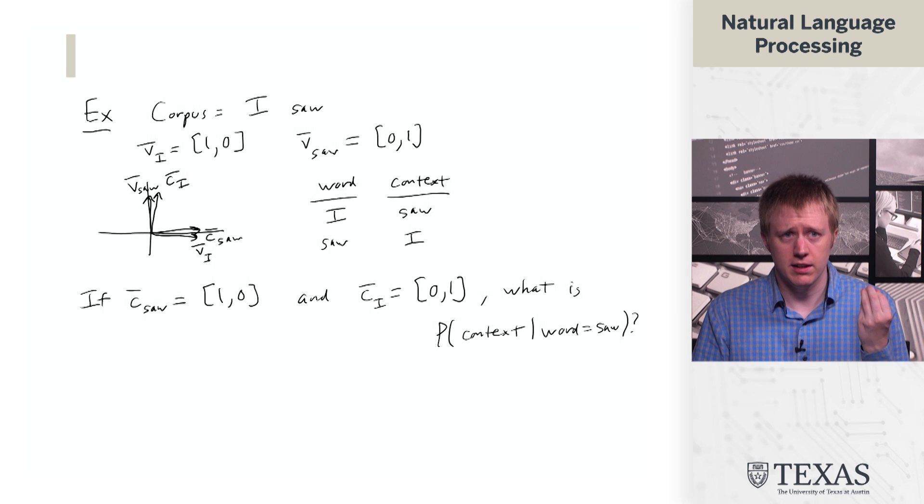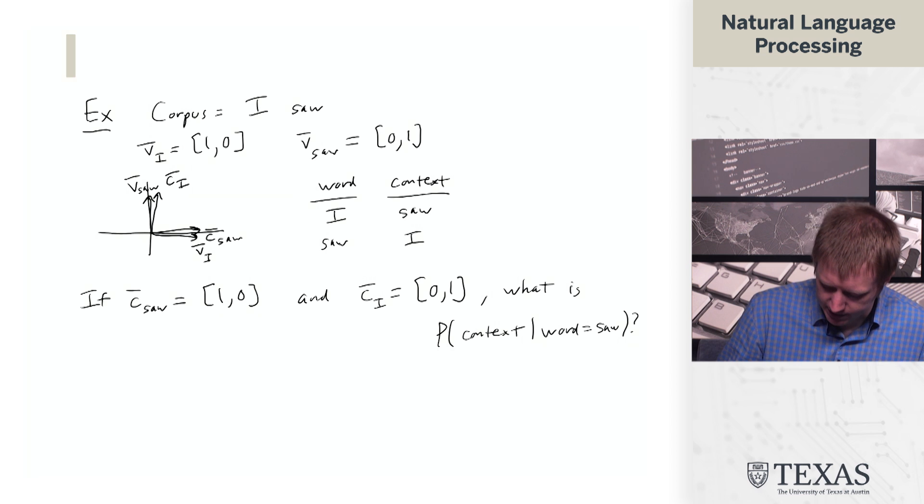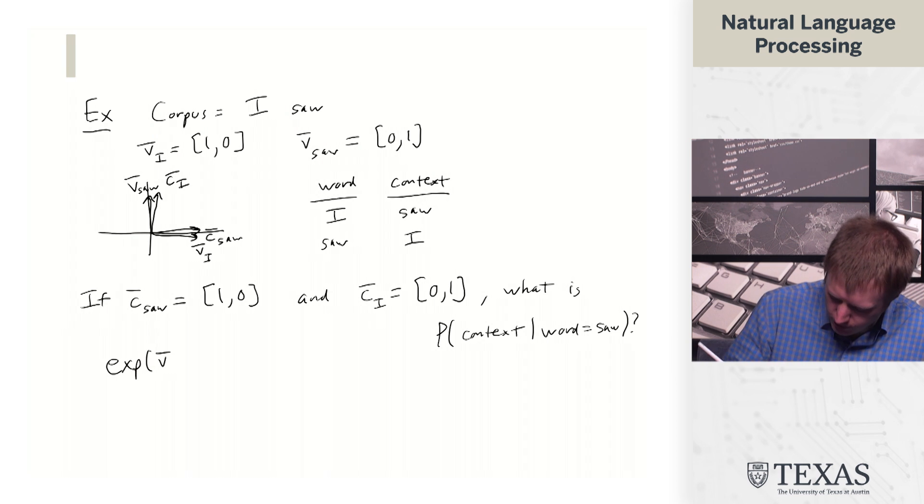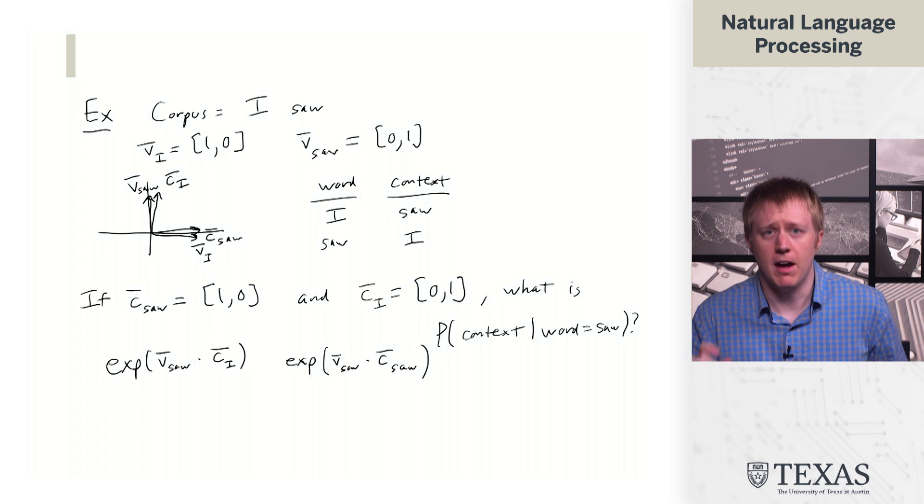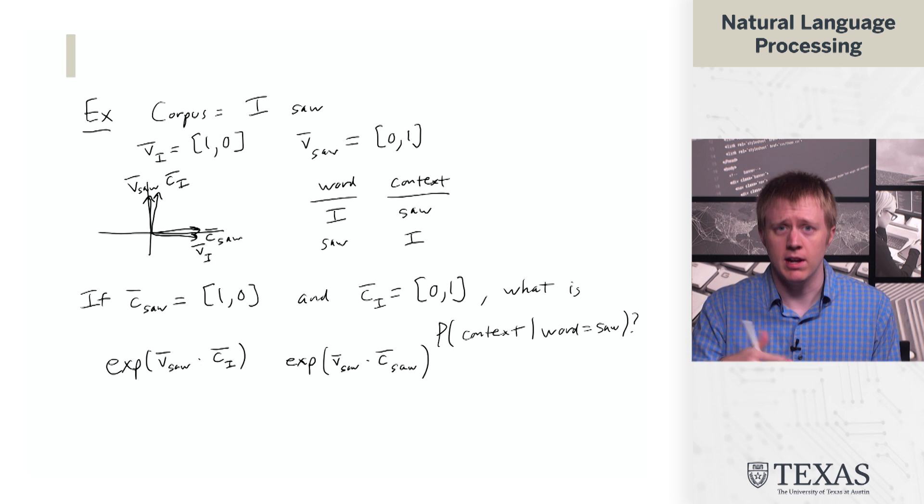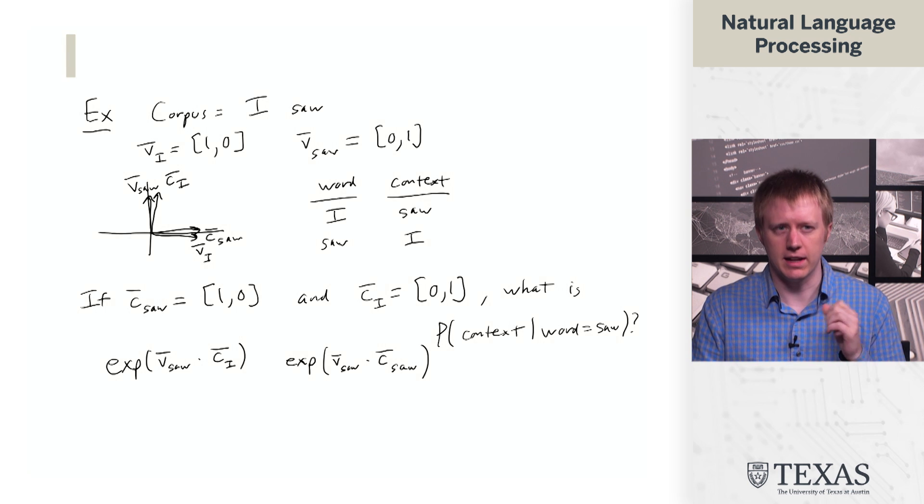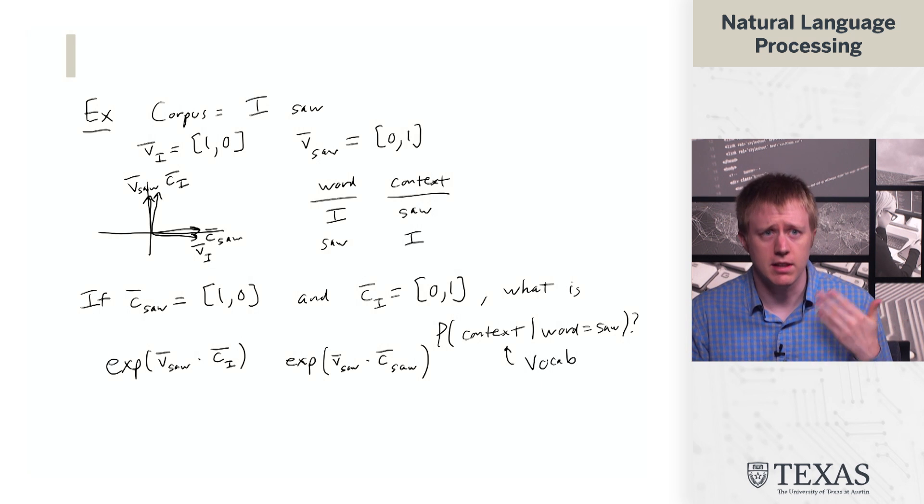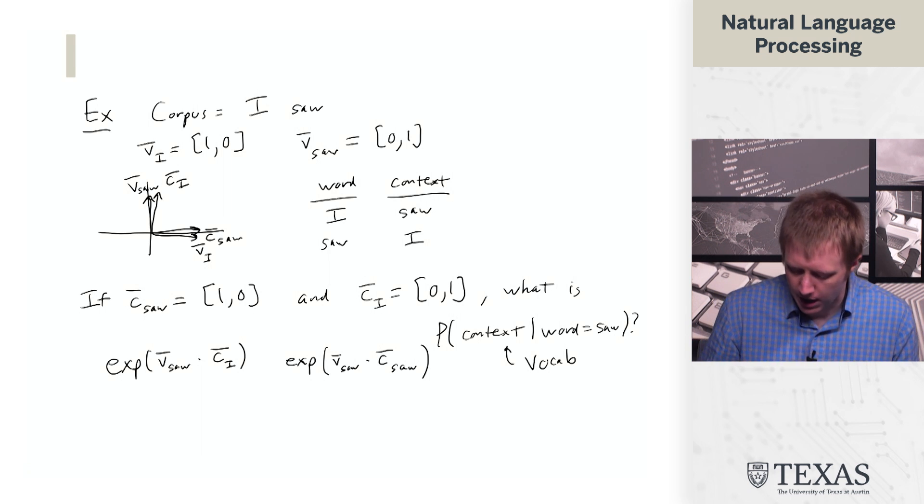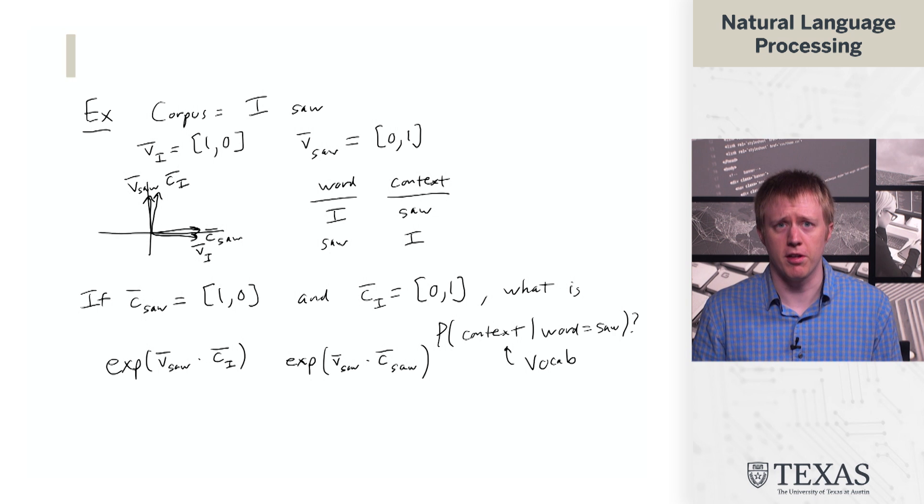And we could go through the computation that we saw on the previous slide. And for this particular example, we have to compute exp of vsaw.ci. Now, this is important because we have to loop over the whole vocabulary. So even though we never see like saw and saw next to each other, like what we're thinking about when we think about this distribution is we're thinking about the whole vocab. And so we need to compute these values for everything in the vocabulary.